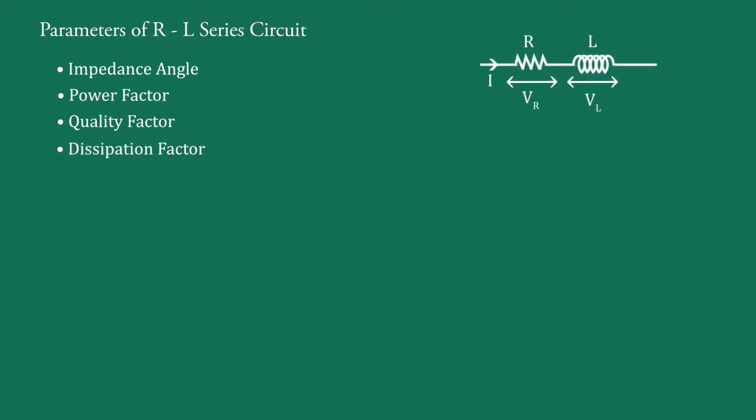This is RL Series Circuit. First, we will calculate impedance angle of RL Series Circuit. Suppose an alternating sinusoidal voltage is applied to a circuit containing an inductor of L henries and a resistor of R ohms in series, like this.